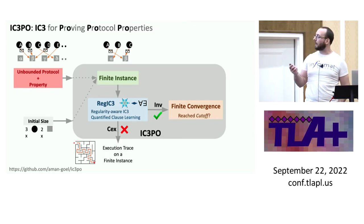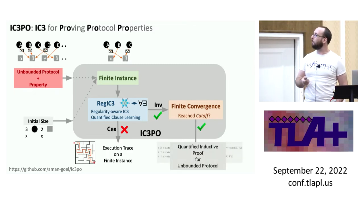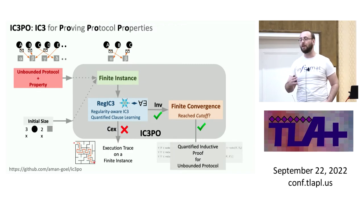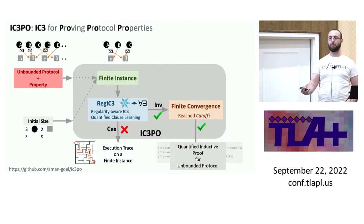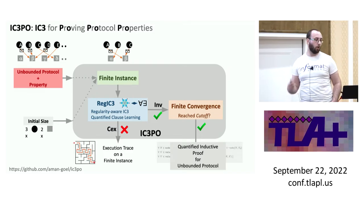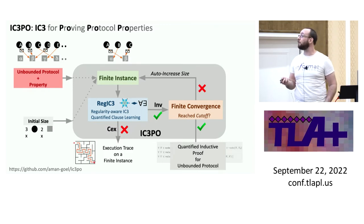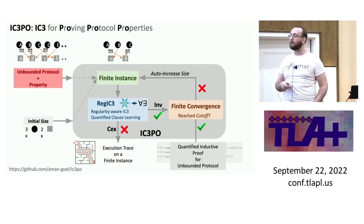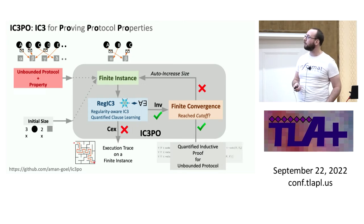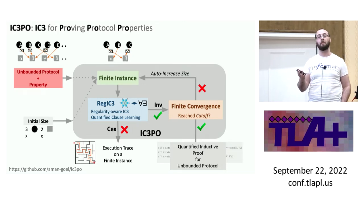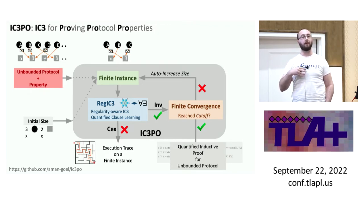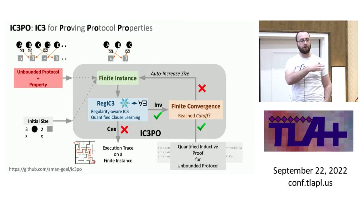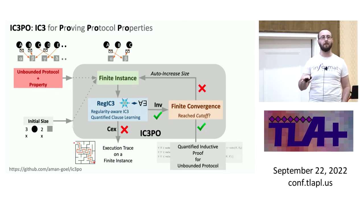Convergence is the property that by verifying this finite system, you know that no system of larger size behaves differently with respect to this property. So one of two things can happen: either you've proved that finite convergence holds — for this finite size you've checked the system and know it doesn't change behavior for larger sizes, so you output the proof and invariant — or it's not converged yet, in which case you go back and increase the size. For example, if three clients and two servers doesn't converge, try three clients and three servers. Then check three clients and four servers: if that behaves identically to three servers, you're done.